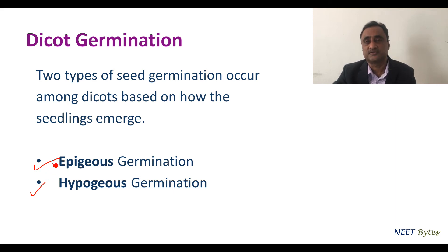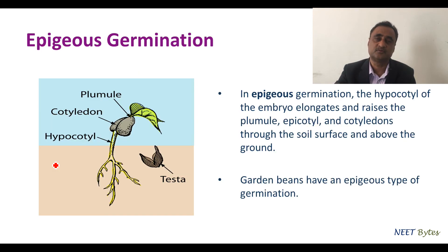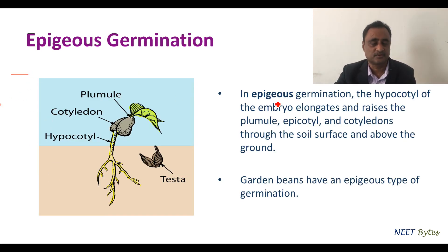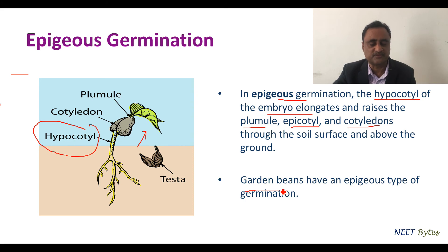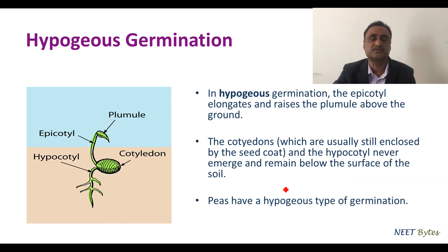There are two types of germination: epigeal or hypogeal germination. These two are divided based on whether the cotyledons are above or below the surface at the time of germination. In epigeal germination, the hypocotyl of the embryo elongates, and as a result the plumule, epicotyl, and cotyledons come above the surface of the earth. Garden beans are a typical example of epigeal germination.